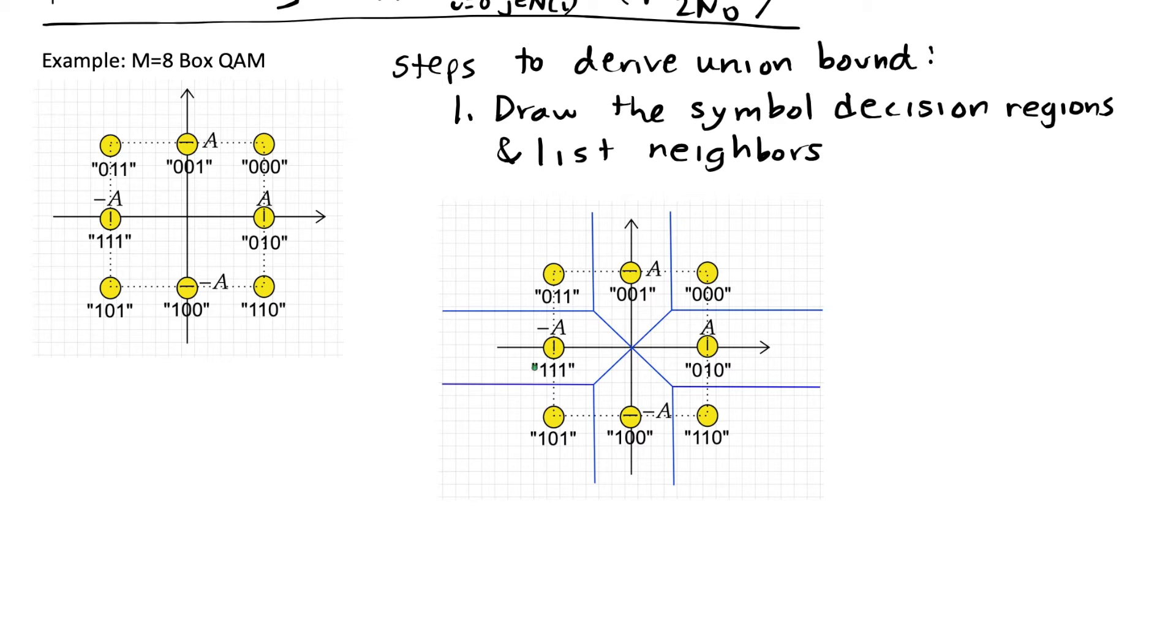Let's take symbol 111 as the example. The nearest neighbors would be this one, this one, this one, and this one. It wouldn't include the 010 symbol even though they touch at one point. The simple rule would be that if there's a line in the decision region included, then that indicates that two symbols are neighbors. If it just meets at a point, then that does not indicate that they are neighbors.